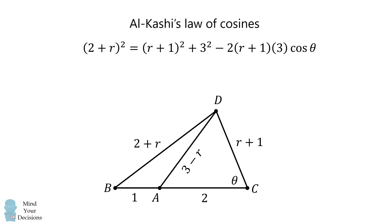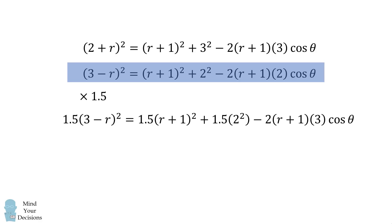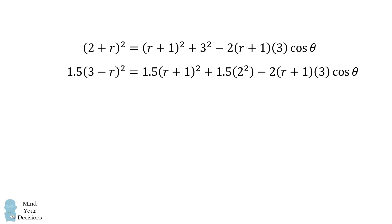We can make a similar equation for triangle ADC. Now, we can consider just these two equations. What we'll do is we'll multiply the second equation by 1.5. This makes sure that the term with cosine of theta will be equal in both equations.